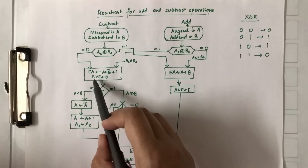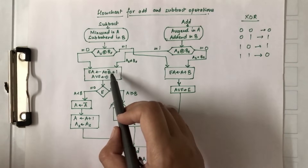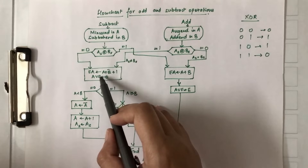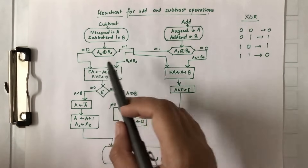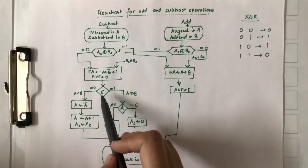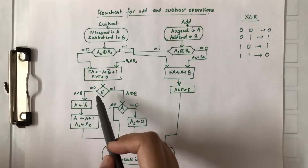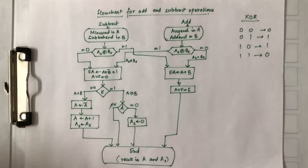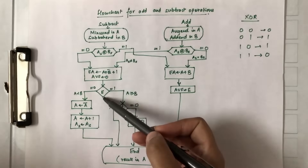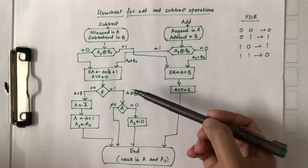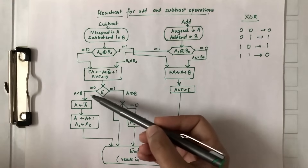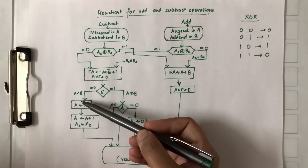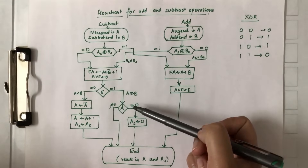Coming to the subtraction part, what we are doing is adding the two's complement of B to A, and the result is being stored in EA. The value of E determines which number is greater: if the value of E is 1, A is greater than or equal to B; otherwise A is smaller than B.